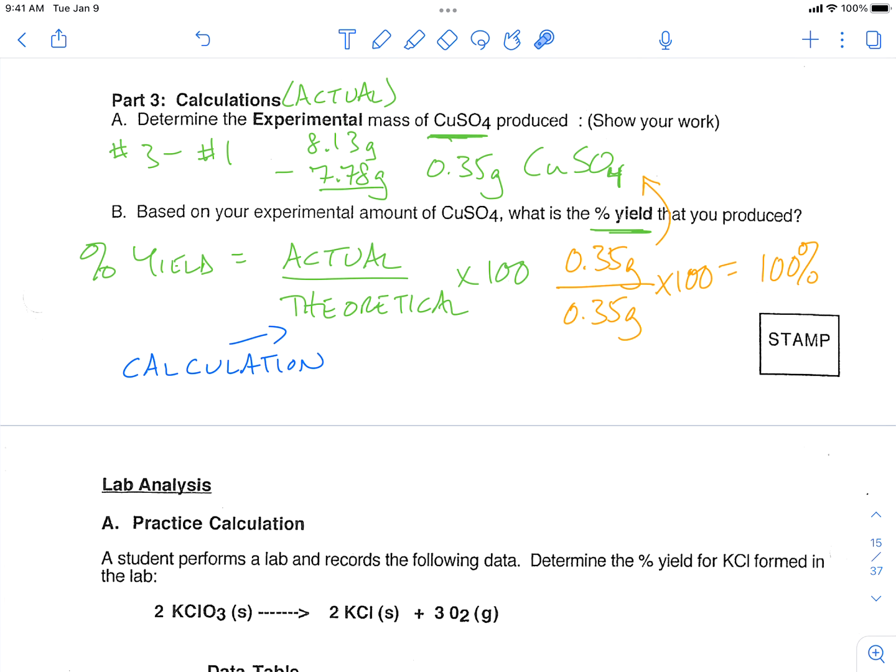And if our actual yield, which is this, is higher, then the percent yield can be over 100%. But that's how we look at percent yield.